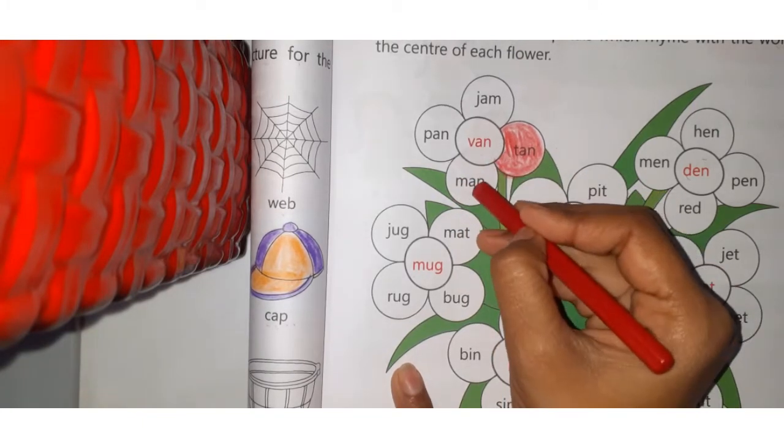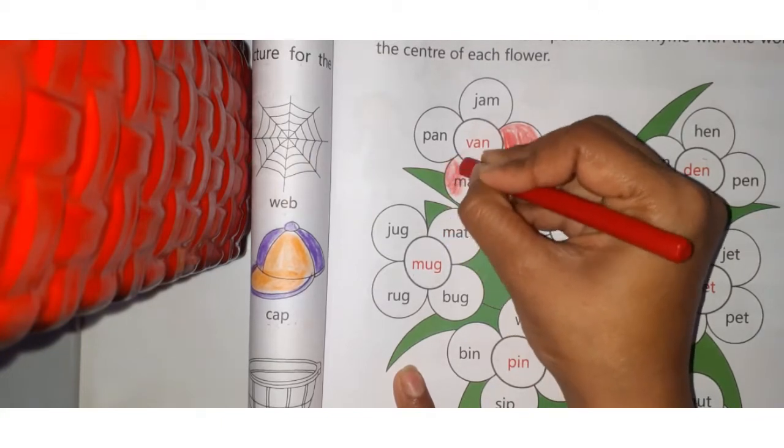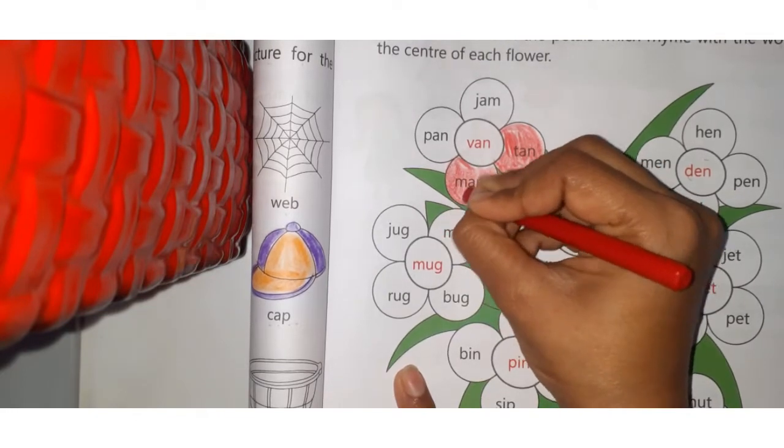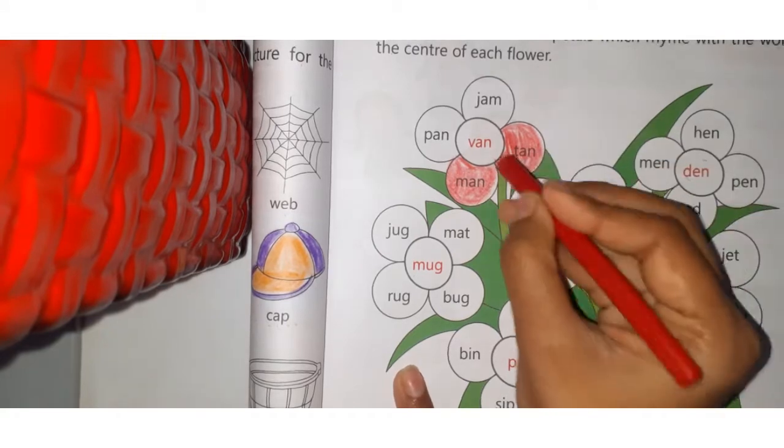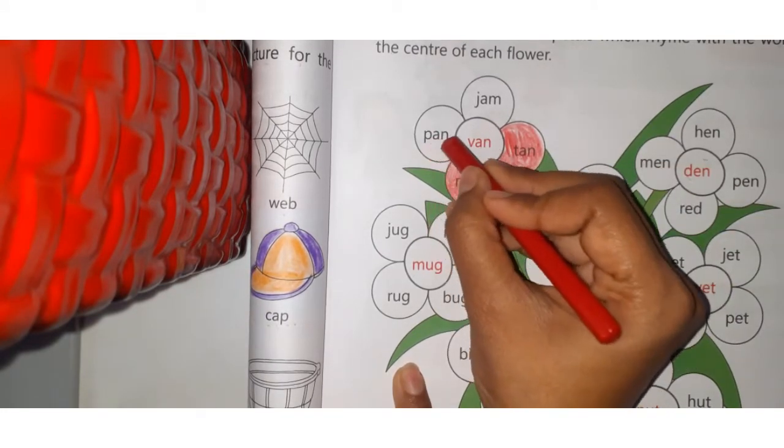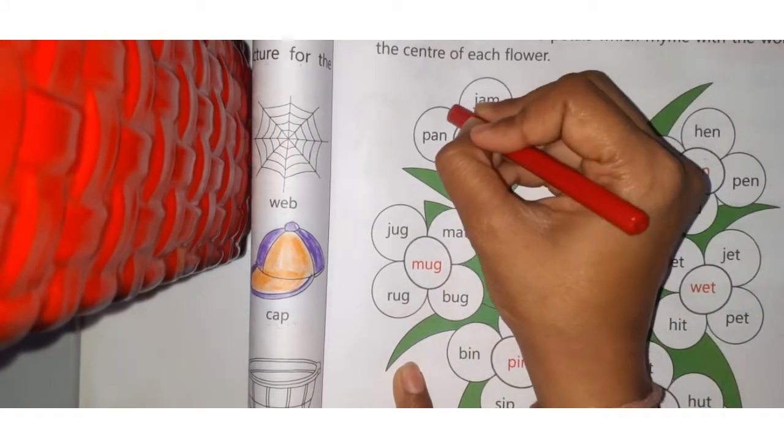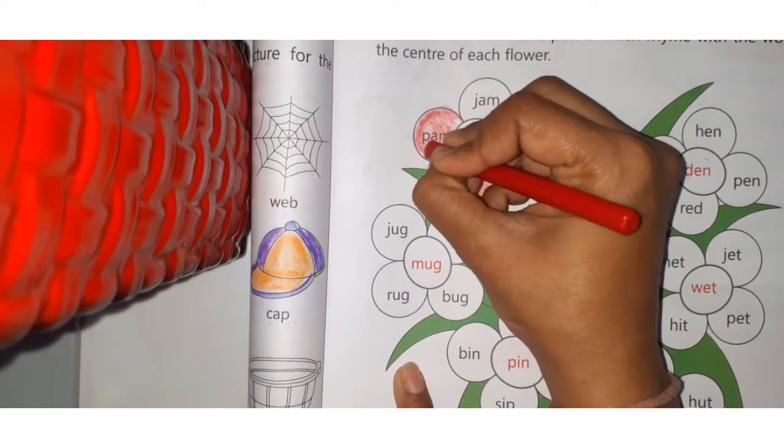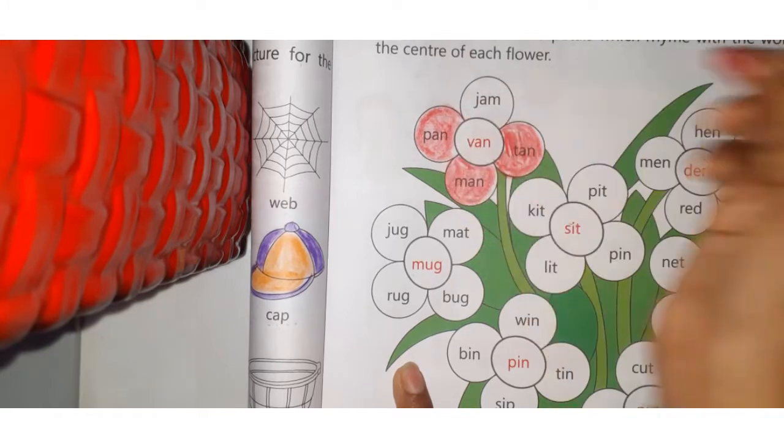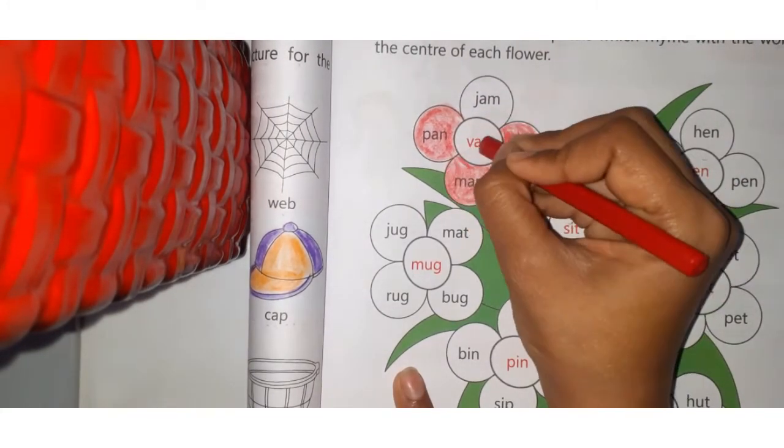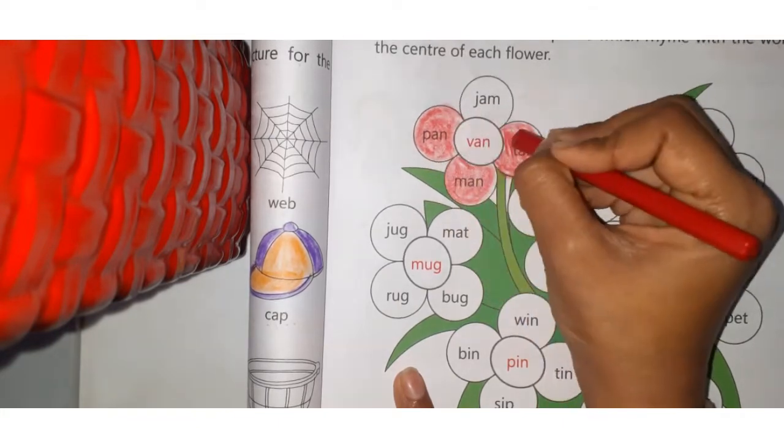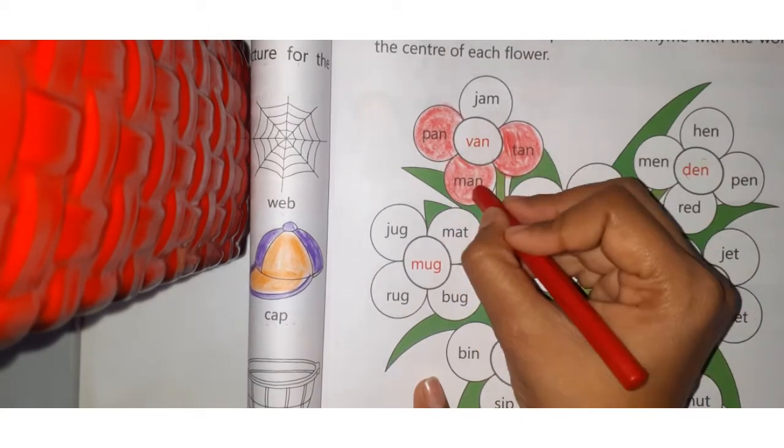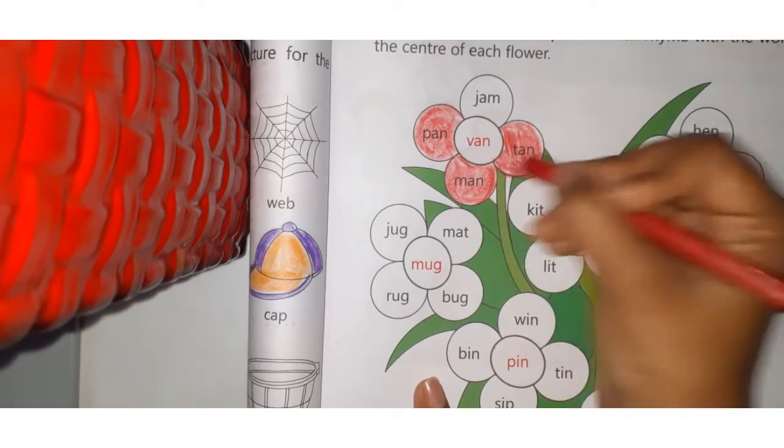VAN, MAN - yes, this is also similar. These are rhyming words because the last sound is similar, the same. Van, man, then van, pan. VAN, PAN - yes, these are also rhyming words, so you have to color this petal too. So here three are rhyming words. How many rhyming words does VAN have? Three. Repeat after me: van, pan, man, tan.